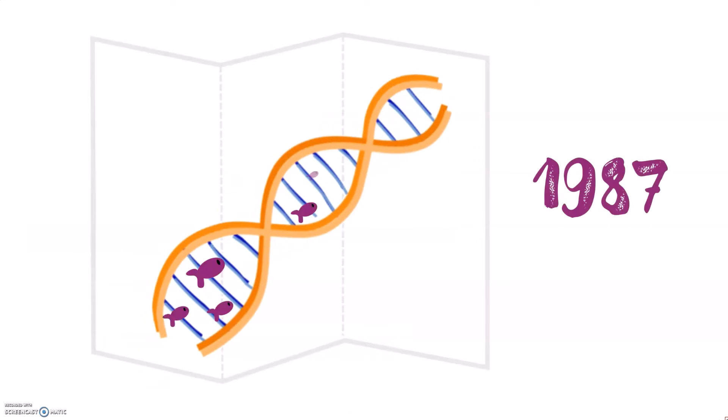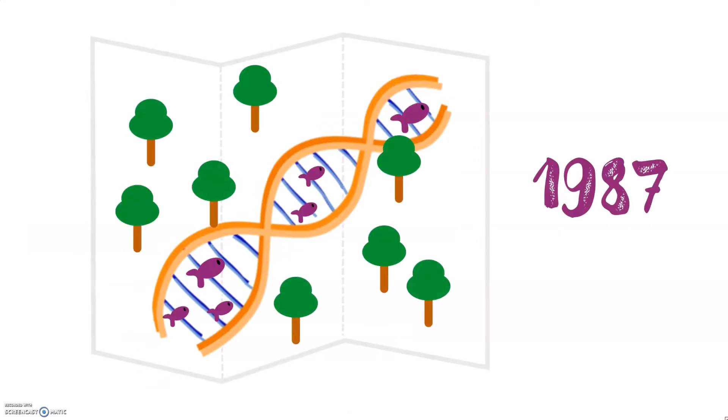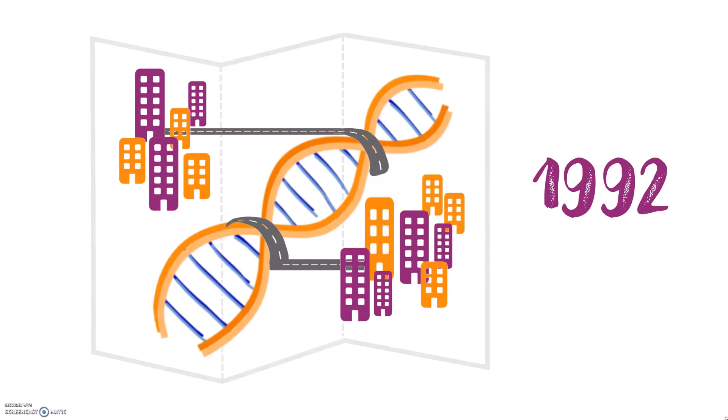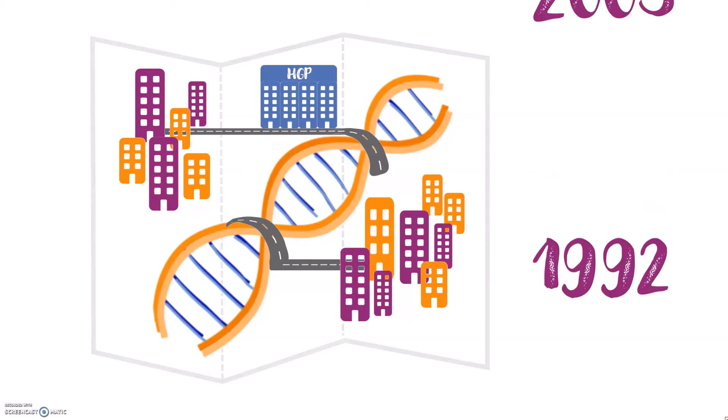In 1987, the first generation comprehensive human genetic map was created, which was updated in 1992 as part of the Human Genome Project. This project was pivotal to human genetics, resulting in the first ever complete human genome sequence in 2003.